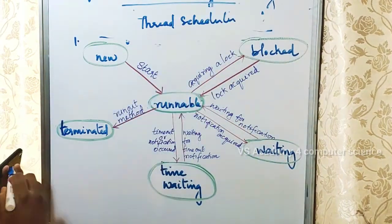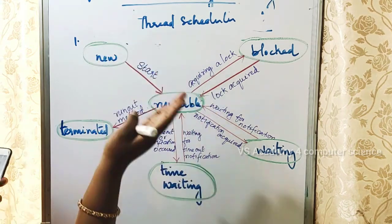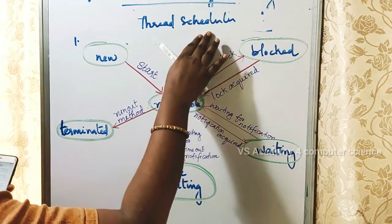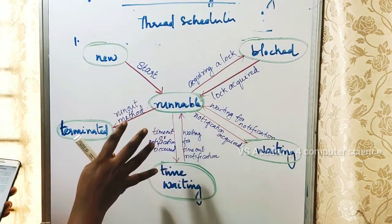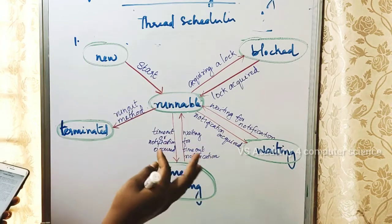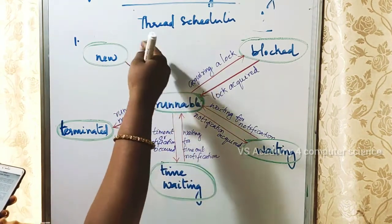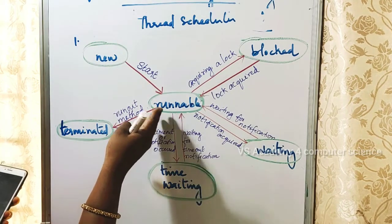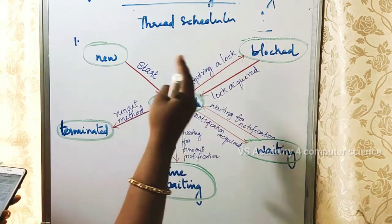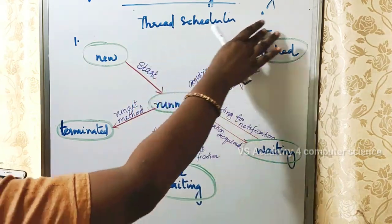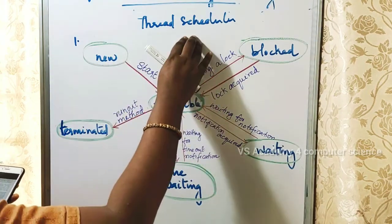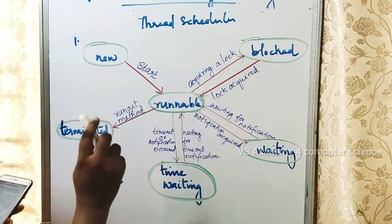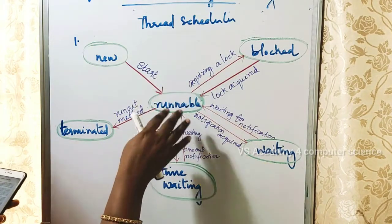In a process with multiple threads, whether a thread is running or waiting as runnable is determined based on thread priorities. The thread scheduler decides which thread runs. In Java, the thread scheduler is part of the JVM — the JVM handles the scheduling of threads.